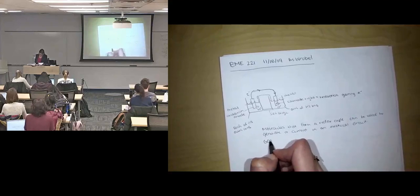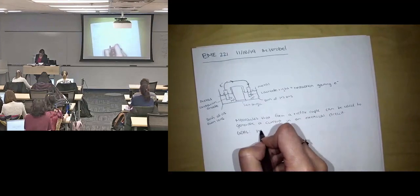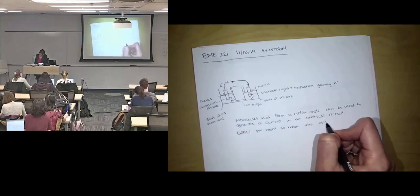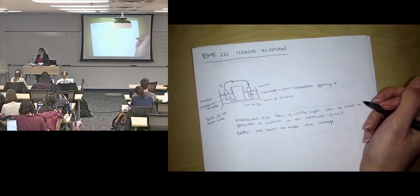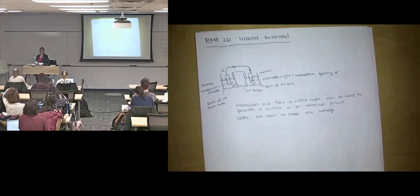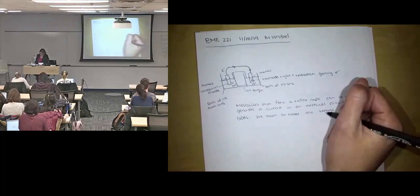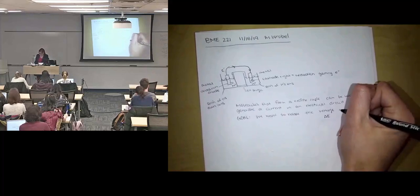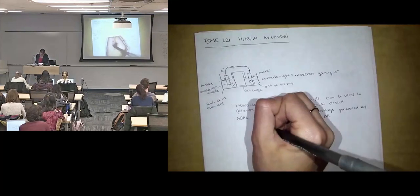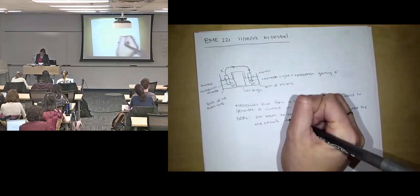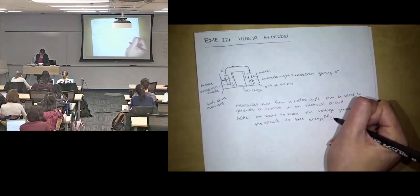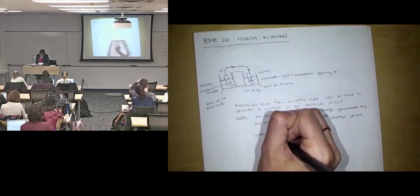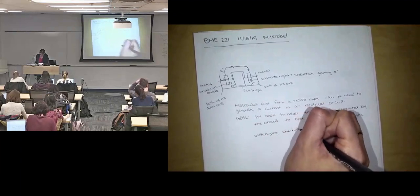And our goal, what I sort of alluded to last time, is what we ultimately care about is we want to relate the voltage generated in the circuit. And so other ways to think of voltage included electromotive force, electric potential difference, delta E as our notation for it, in volts. So we want to relate the voltage generated by our circuit to the free energy change, free energy changes given by delta G, of the underlying chemical reactions that are happening.